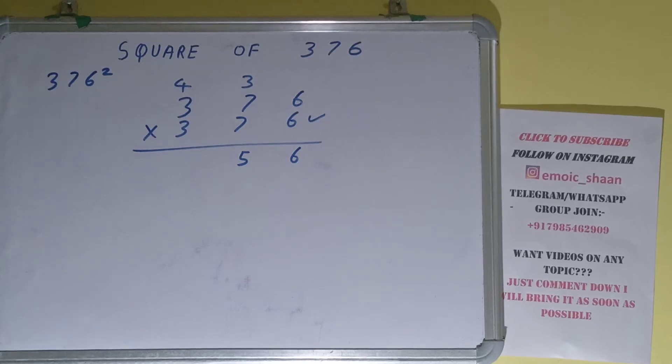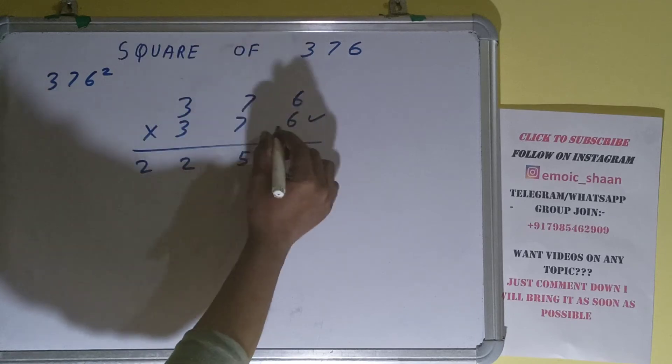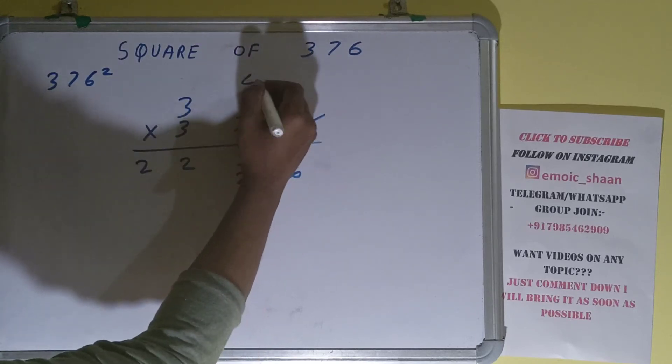Now this 7. 7 times 6 is 42, 4 carry. 7 times 7 is 49 plus 4 is 53, 5 carry.